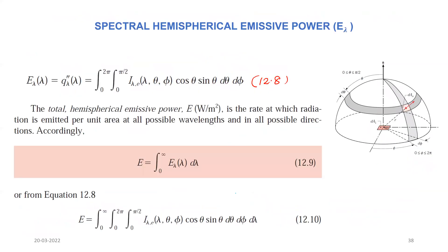So E_lambda as a function of lambda equals the spectral radiant flux Q_lambda'', which equals the integral of i_lambda_e(λ,θ,φ)·cos(θ)·sin(θ)dθdφ, with theta varying from 0 to π/2 and phi varying from 0 to 2π.